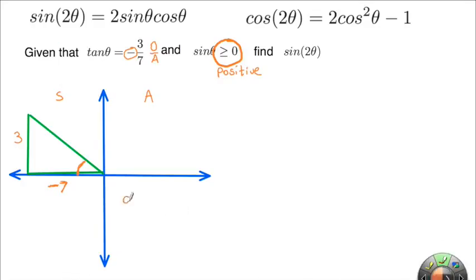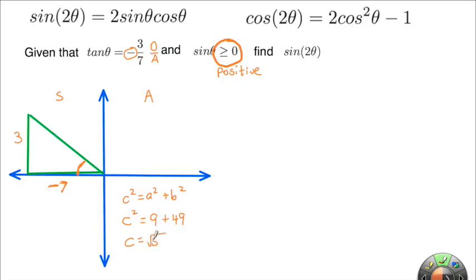We're going to use the Pythagorean Theorem: c² = a² + b², where c is the hypotenuse. So c² = 3² + (−7)². Well, 3 squared is 9, and negative 7 squared is always positive, giving 49. So c equals the square root of 58. This side is the square root of 58.